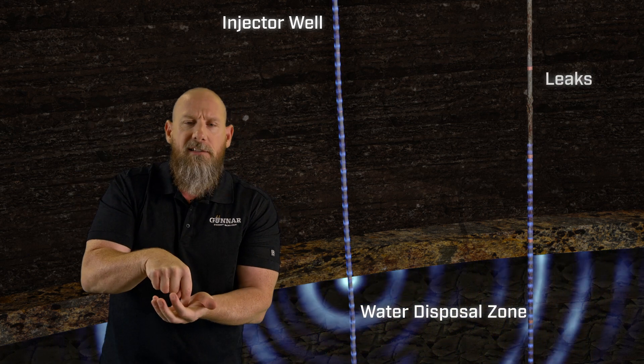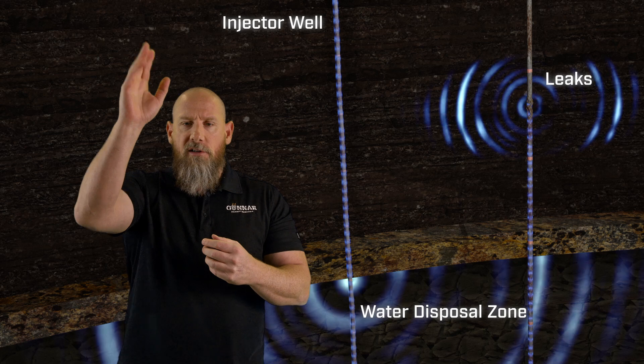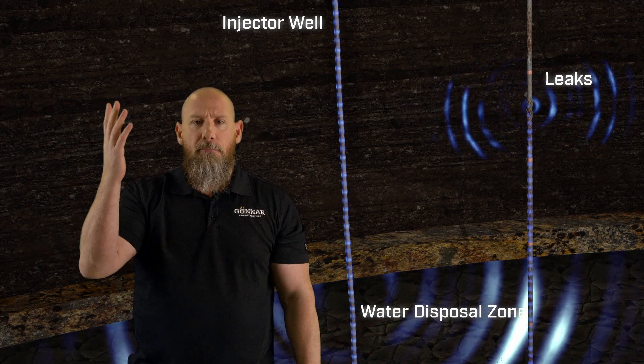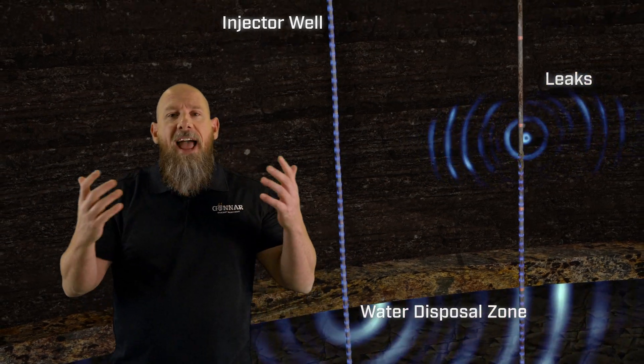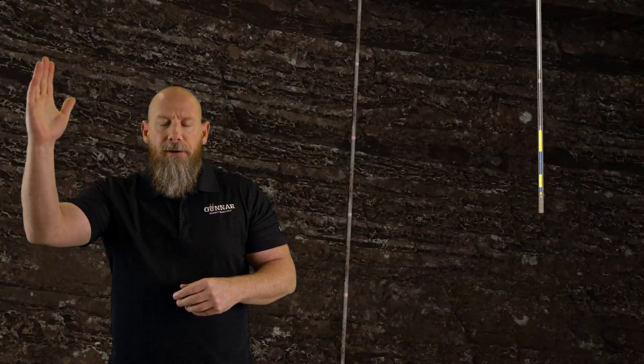So what the customer wanted to do here was repurpose this old field to inject produce water. But you can't do that in an old well if that water could leak back into other zones or back to surface. So in that case, folks, what happens when a concentric reentry and abandonment is not possible? Well, in that case, we skid the rig and we drill an intervention well.